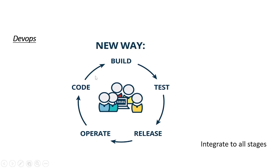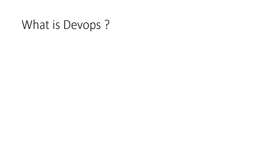DevOps is to integrate all the stages like code, build, test, release, and operate. DevOps is not a technology — it's referred to as a methodology. It promotes communication and collaboration between developer and operation teams. It's a comprehensive approach that encompasses a set of principles and practices in software development and delivery.